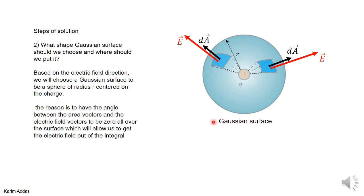Because in Gauss's law, you have integration of E dot dA. So in order to get the electric field outside of the integration, you need to be able to get rid of the dot product.